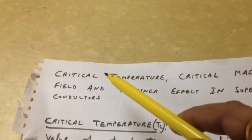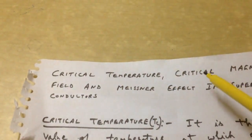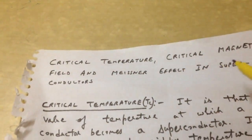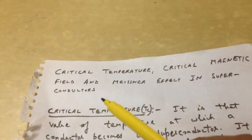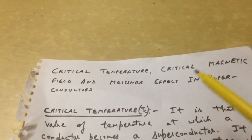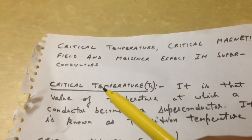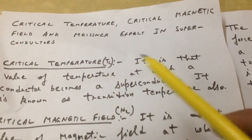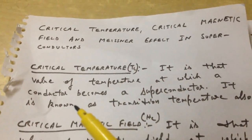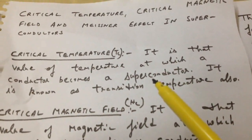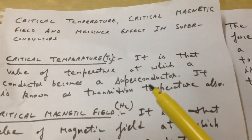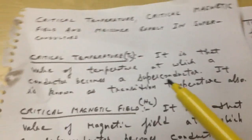Today I will discuss the critical temperature, critical magnetic field, and Meissner effect in superconductors. We cannot explain the Meissner effect without first understanding critical temperature and critical magnetic field. Critical temperature is that value of temperature at which a conductor becomes a superconductor. Due to this transition from conductor to superconductor, this temperature is also known as the transition temperature.